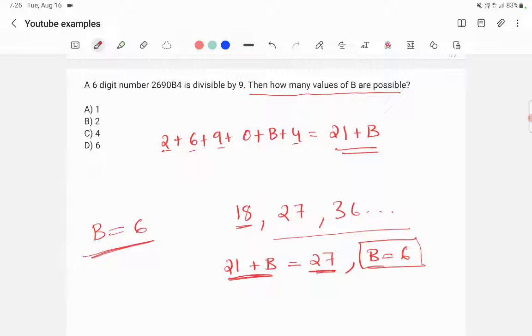The question didn't ask what is B. It asked how many values of B are possible. In such cases, you need to look into the number of possibilities. Here the number of possibilities is 1. So answer is option A, 1.